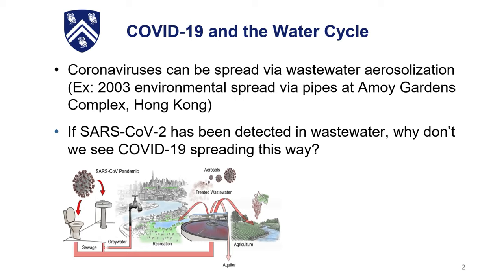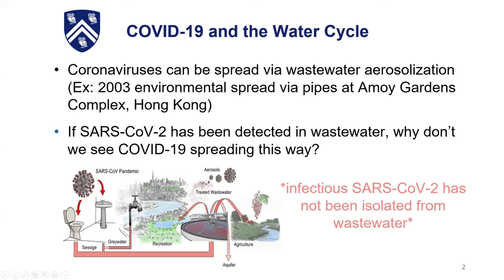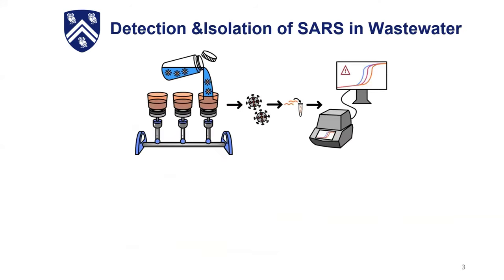We found that one scientific advancement that hasn't fully been made yet was impeding our answer to this question: we can't yet isolate or detect infectious SARS directly from wastewater. And when we look at why this might be, our current methods of detecting and isolating SARS in wastewater really highlight it.